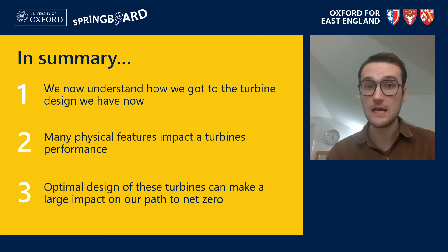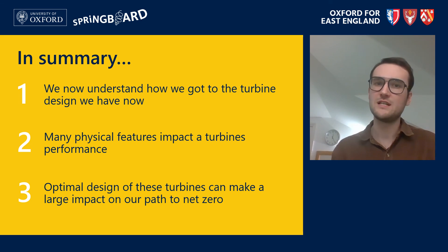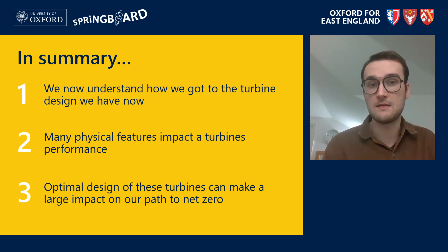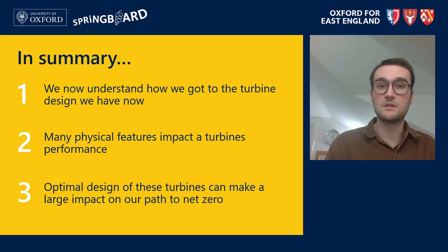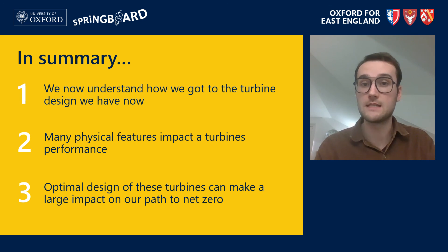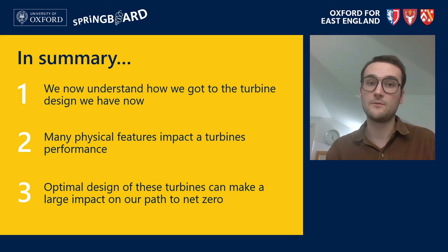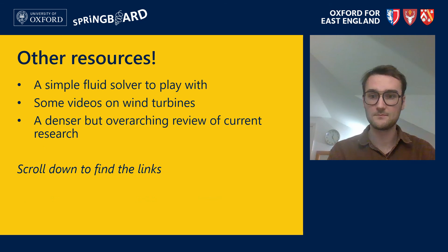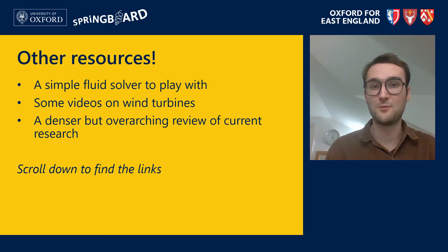In summary, we spoke about the need for increased renewable energy sources and a couple of reasons why we have the turbine designs we have today. We noted that there are many physical features impacting a turbine's performance, and specifically we saw how changing the layout of our wind farm can increase the power extracted by up to 40%. Optimizing these designs can have a large impact on our path to net zero, and as we saw at the start, there is a lot of non-renewable energy to replace. If you want to play around with fluid flows or see more information on wind turbines, I've added a couple of links here. Thanks for sticking around.